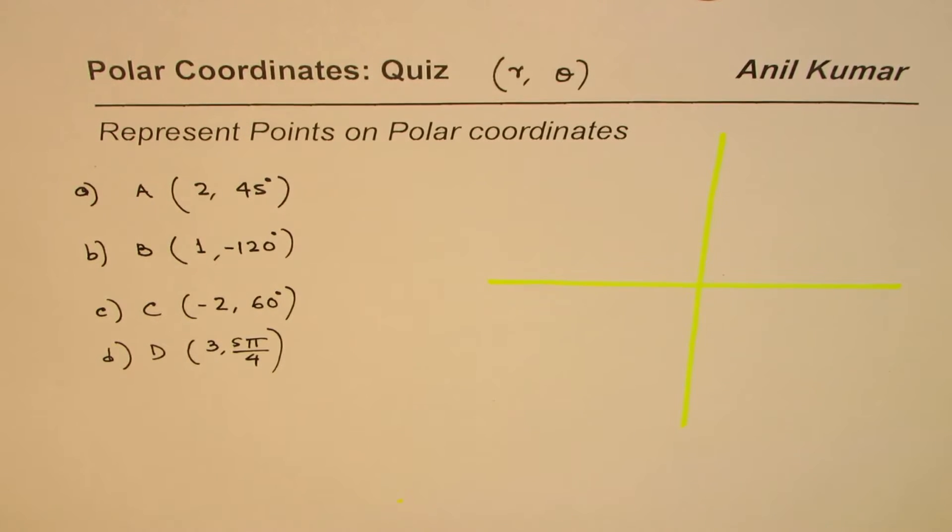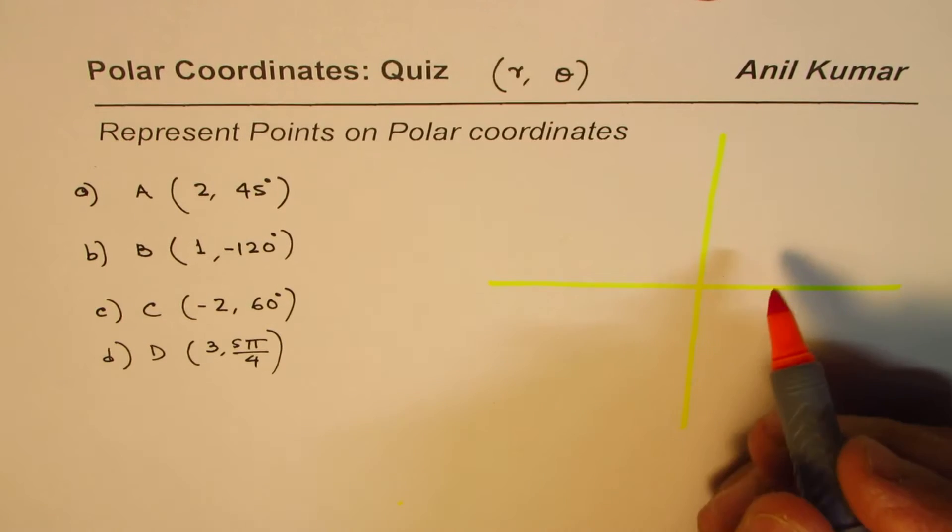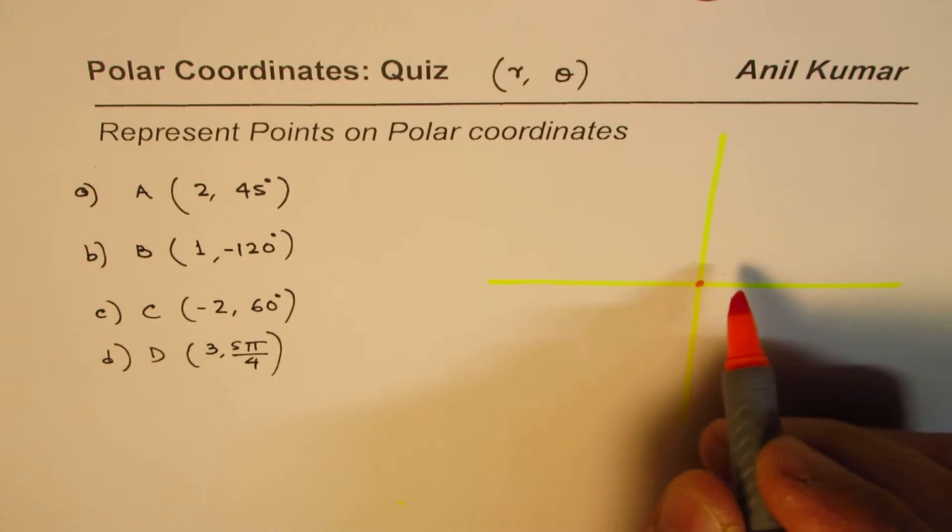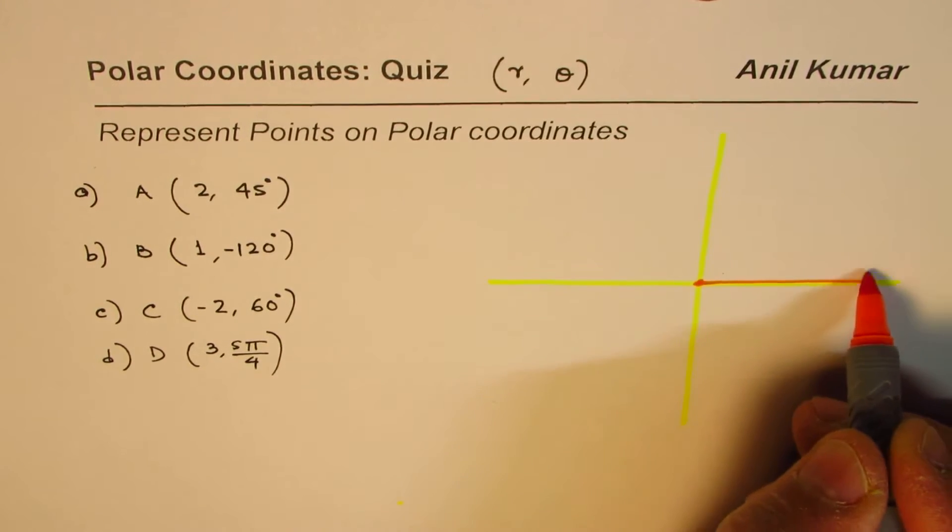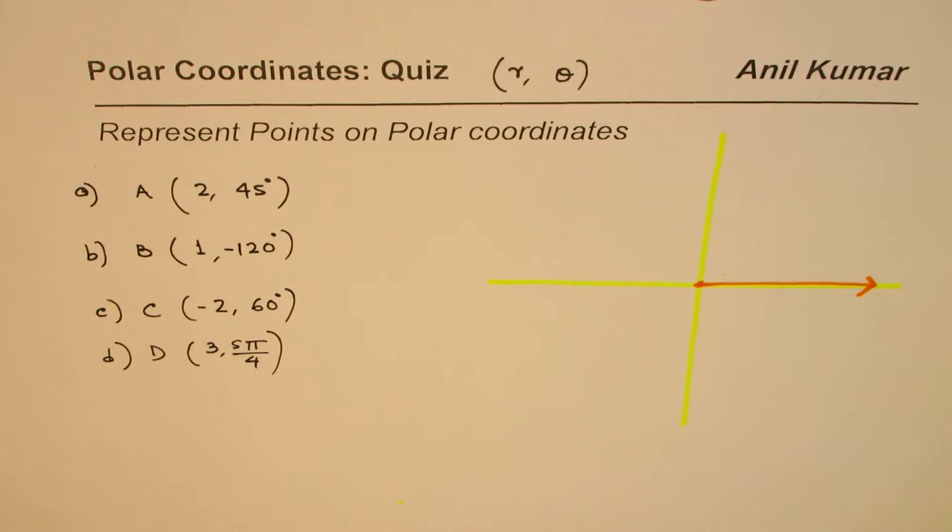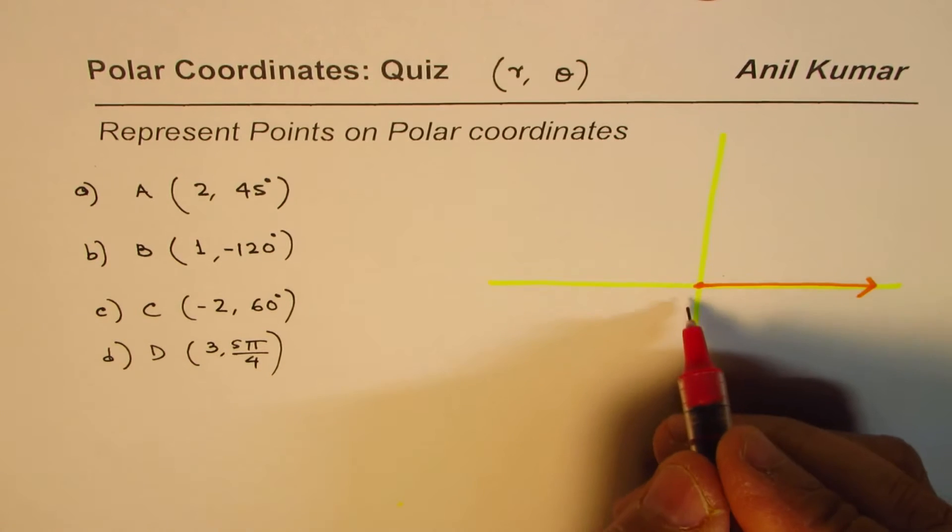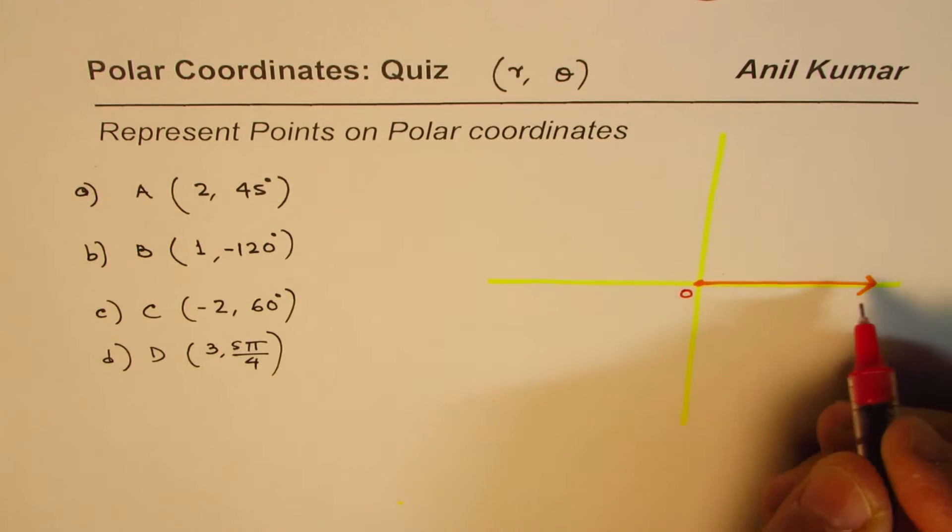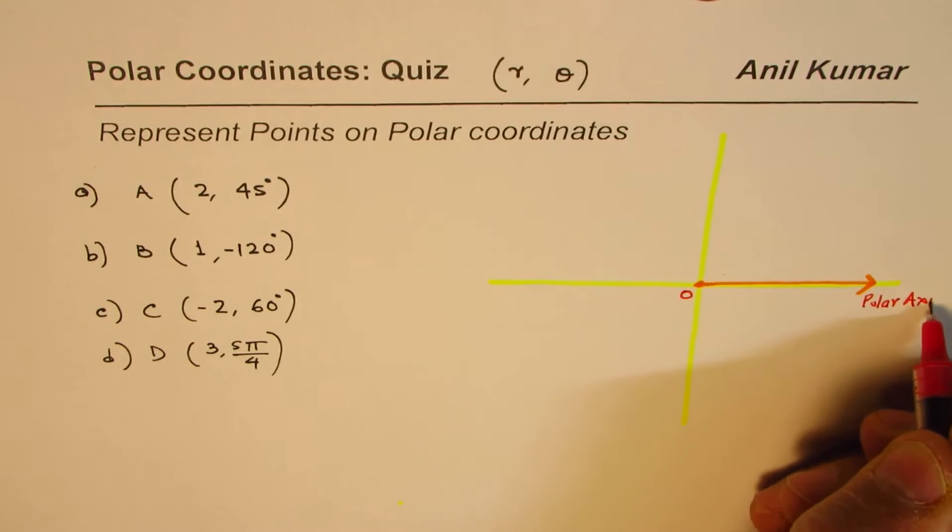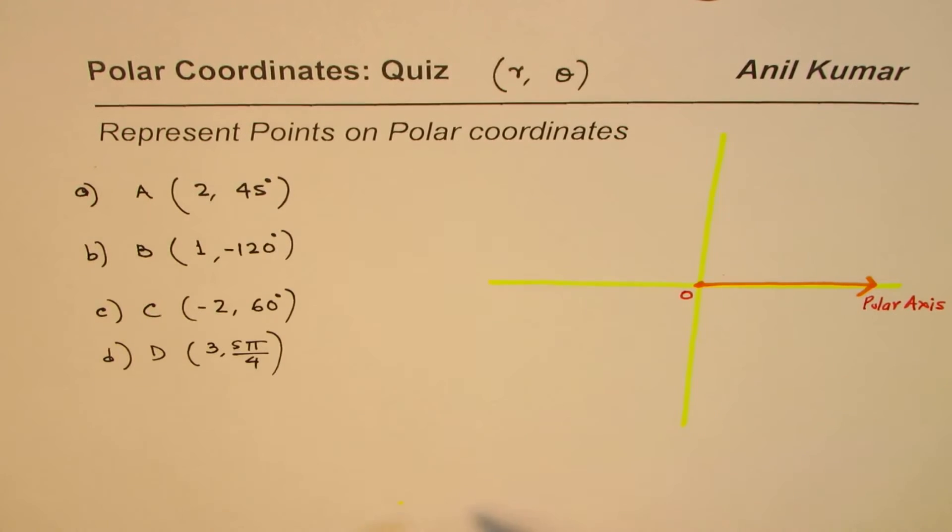This plane will represent the polar plane for us. That's the pole, and this is the real axis which we call as the polar axis. Here is our pole, which is our origin, and that's the polar axis.